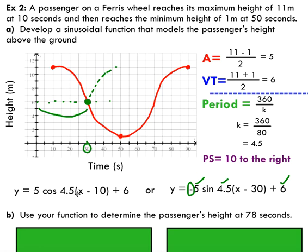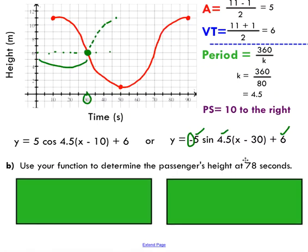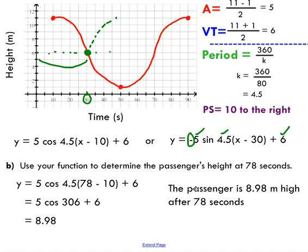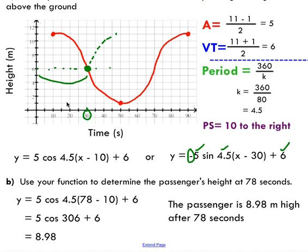We came up with a model, and we're now able to determine the passenger's height at 78 seconds by using our function. 78 seconds is a time - we could substitute that in for x, and we can determine y, because this is a function. So we're going to substitute in 78, we get 78 minus 10 times 4.5, we're taking the cosine of that value, and multiplying by 5 and adding 6. You get 8.98, which tells us that the passenger is 8.98 meters above the ground after 78 seconds.